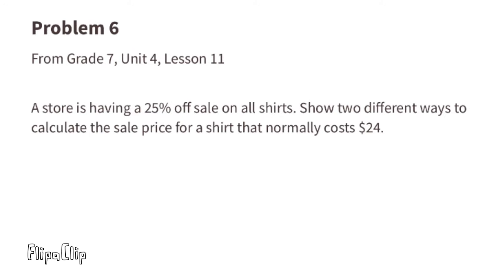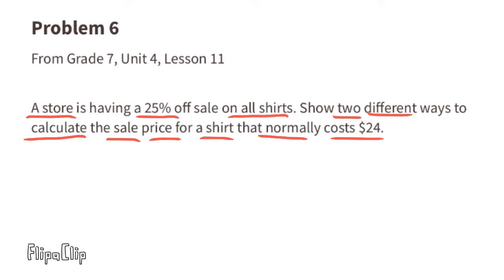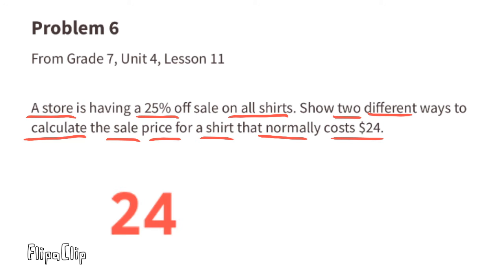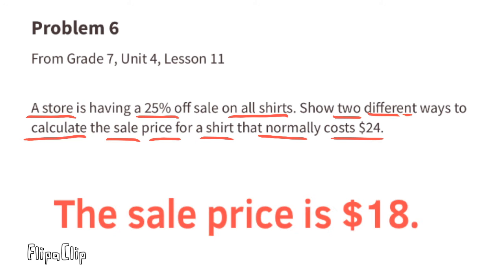Problem number six from seventh grade unit four lesson eleven. A store is having a 25% off sale on all shirts. Show two different ways to calculate the sale price for a shirt that normally costs $24. First method: as a decimal, 25% is 0.25, and 0.25 times 24 equals six. Since it is 25% off, subtract six from $24. Twenty-four minus six equals $18, so the sale price is $18.